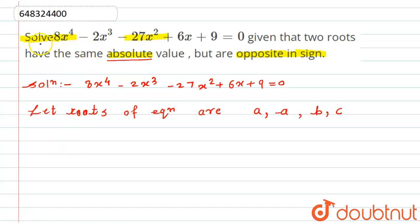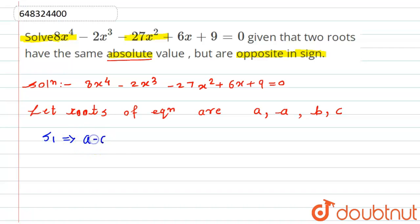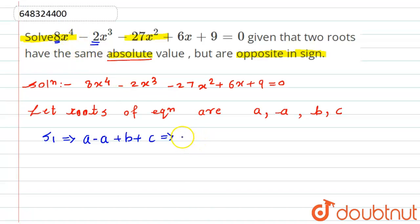As we know the given equation is of degree four, so we can define four terms. The first one is the sum of roots, S1. It is a plus minus a plus b plus c, which equals minus b divided by a, that is minus of minus 2 divided by 8, which gives us 1 by 4. So b plus c equals 1 by 4.